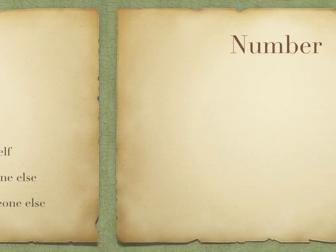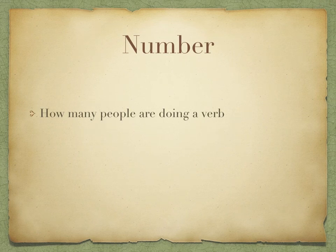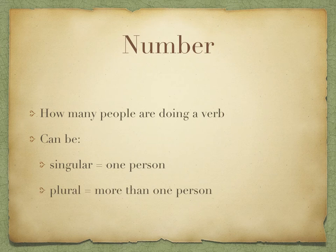Number tells us how many people are doing a verb. It can be either singular, meaning one person is doing the verb, or plural, meaning more than one person is doing the verb.